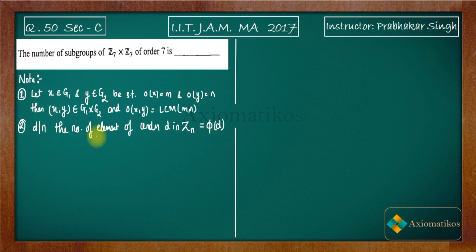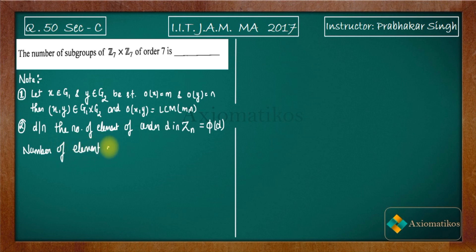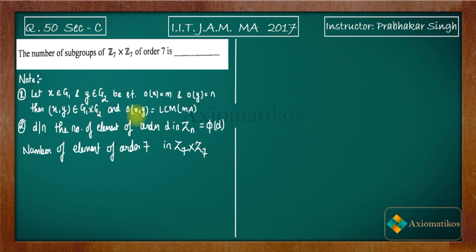Now let us proceed. The first note tells us that if x has order m and y has order n, then the order of (x, y) will be lcm(m, n). So in Z7 cross Z7, the order of an element is the lcm of the orders of its two coordinates. We need to count the elements of order 7 in Z7 cross Z7.